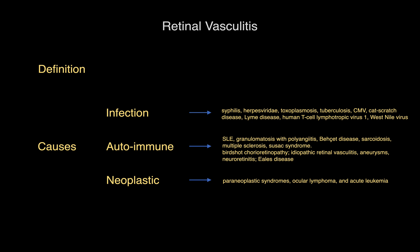Causes of vasculitis may be categorized into infectious, autoimmune, or neoplastic. The most common infectious causes of vasculitis include syphilis, herpes virus, toxoplasmosis, and tuberculosis.